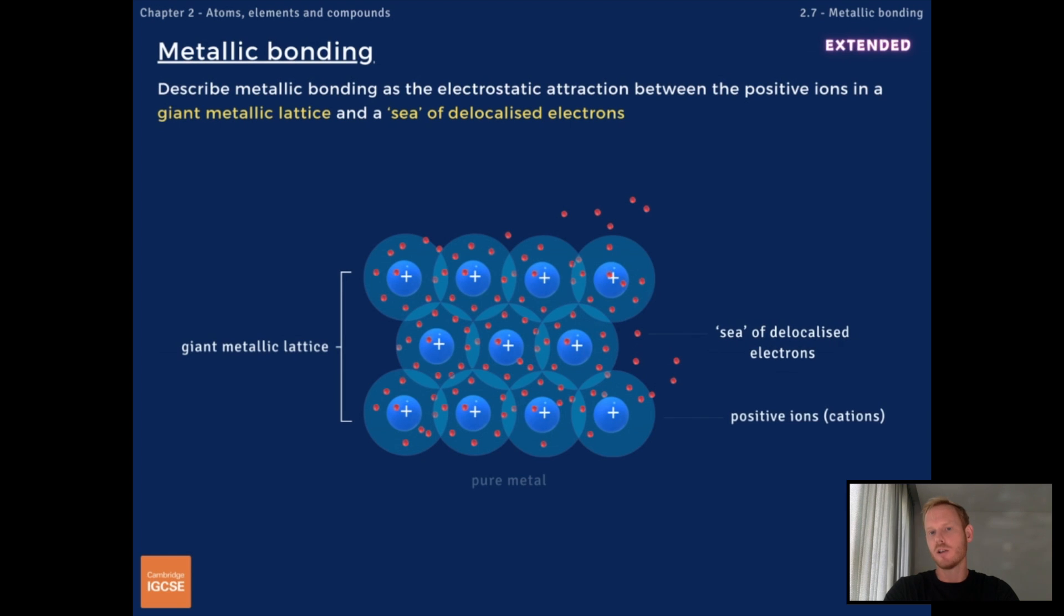The first learning objective requires you to describe metallic bonding as the electrostatic attraction between the positive ions in a giant metallic lattice and a sea of delocalized electrons.